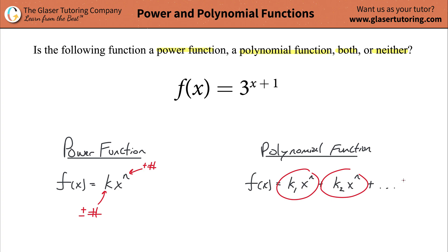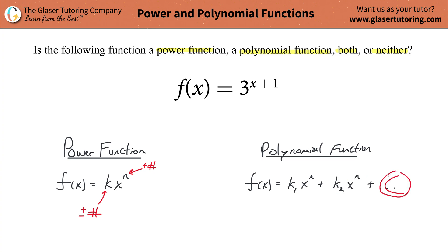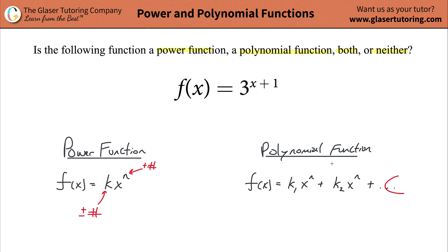A polynomial function is basically a series of power functions added together. You can have one power function in there, and you can add a constant — meaning you don't have a variable in it, just some k value. But you can't have just a constant by itself; you have to have something with a variable in it. A polynomial with one term is called a monomial, two terms is a binomial, three is a trinomial, and so on.